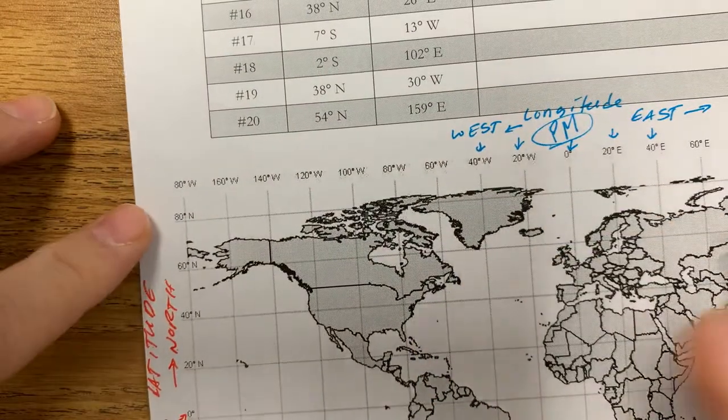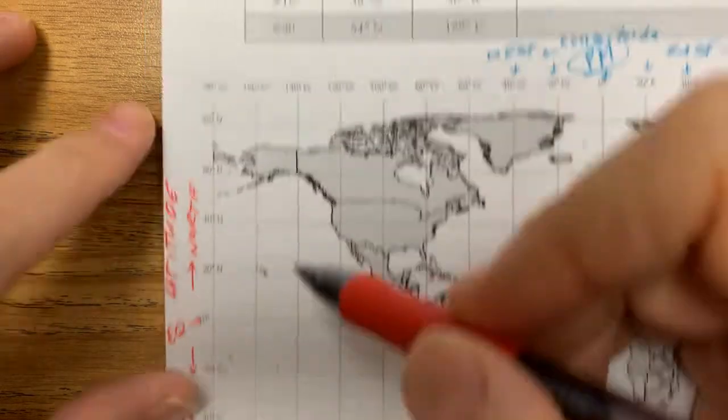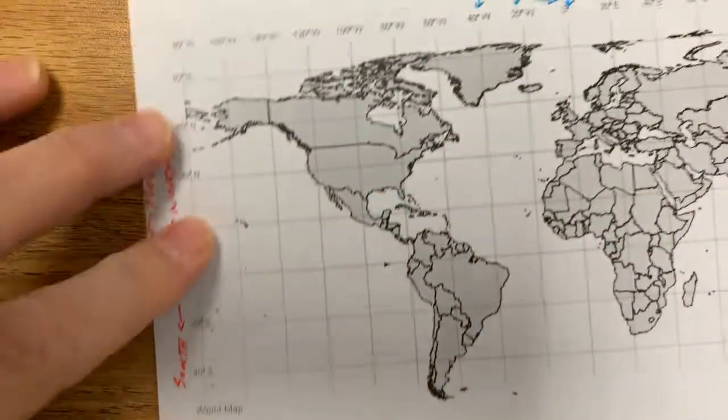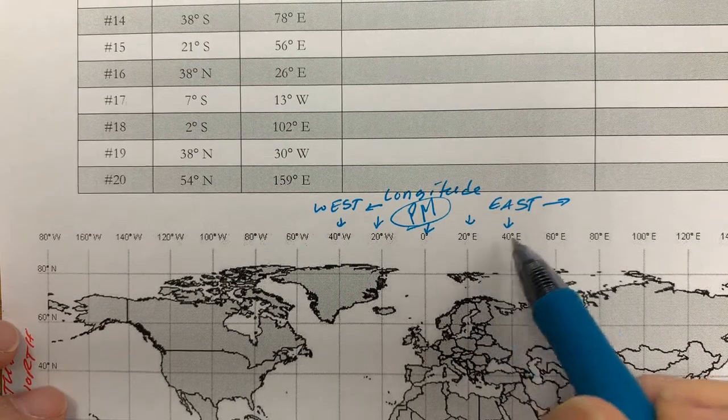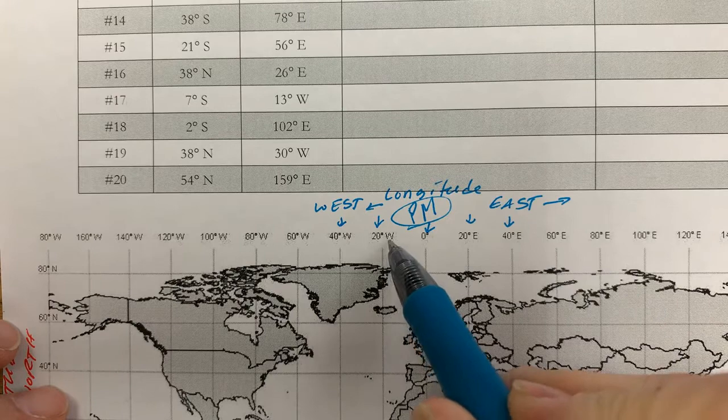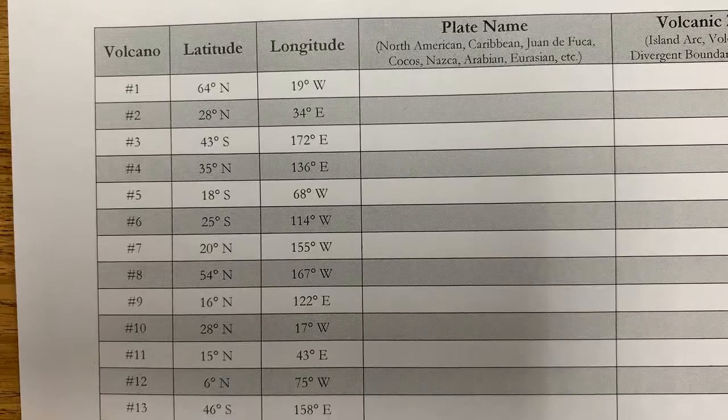You'll note that all these measurements have an N for north latitude or an S for south latitude. Likewise, when you work with longitude, you're going to have an E for east longitude and a W for west longitude. So our first point is 64 degrees north, 19 west.